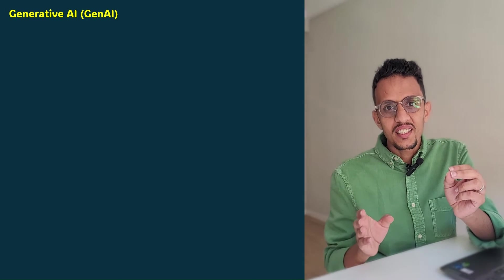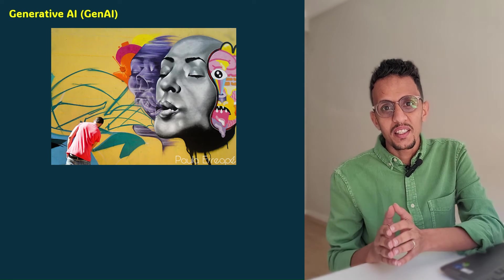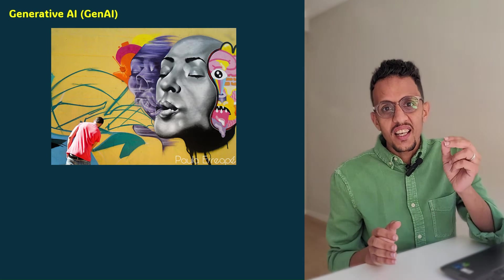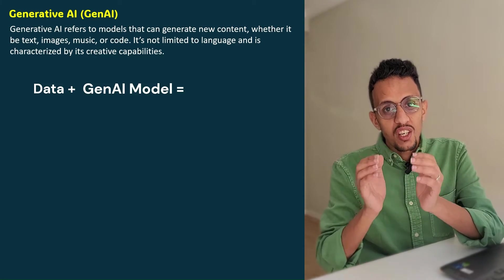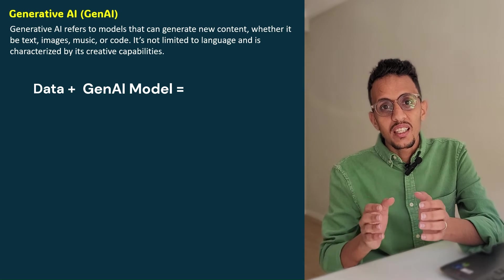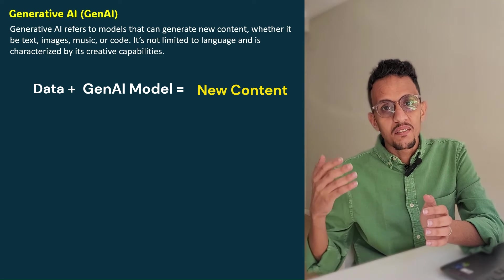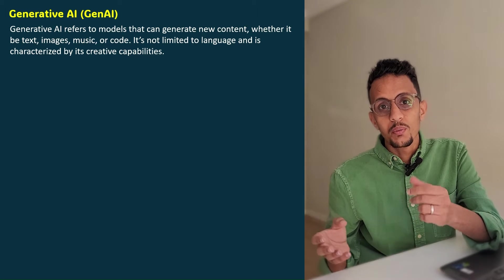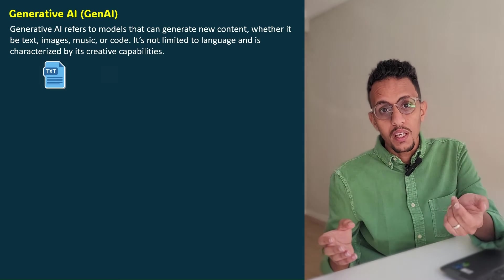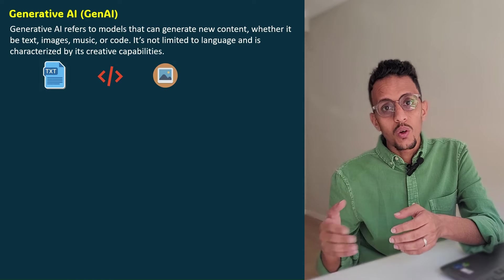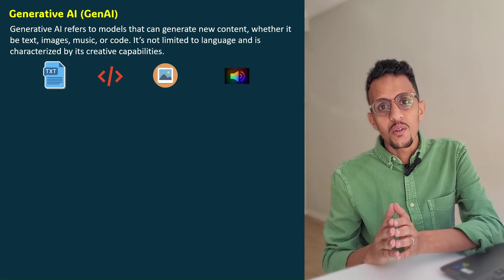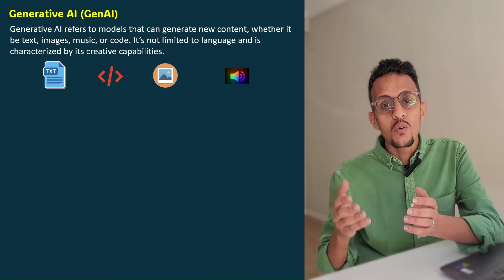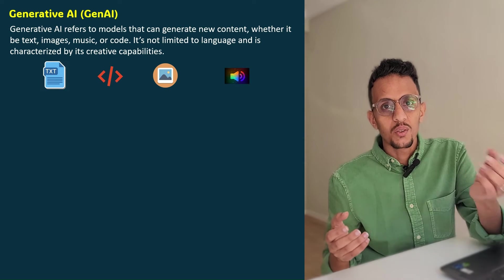Generative AI: you know when you give paints to an artist and he comes up with wonderful paintings? Generative AI is the artist of the algorithmic world. We give data to a Generative AI model and this model comes up with new creative content out of this data. This content could be text or code, it could be an image, or it could be audio and more recently even videos. So, Generative AI refers to the models that can come up with new creative content out of data.